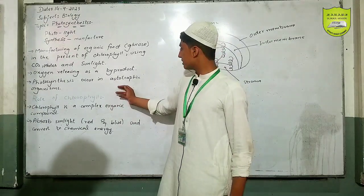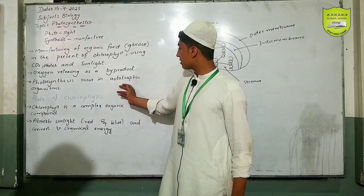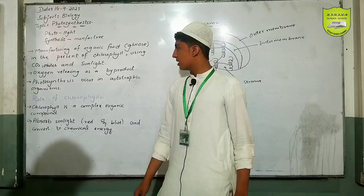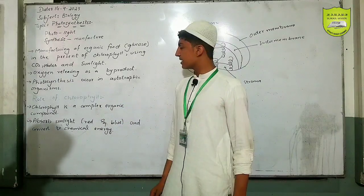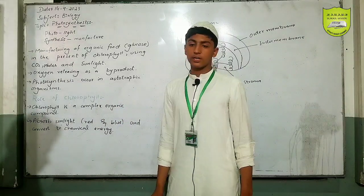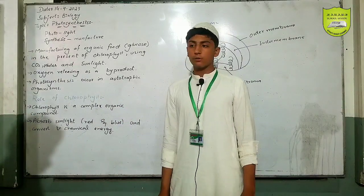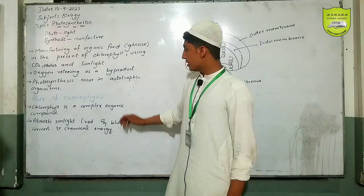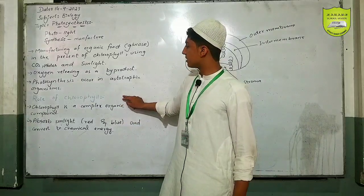Photosynthesis occurs in autotrophic organisms — this is what we call our own organism. This is what we call chlorophyll.